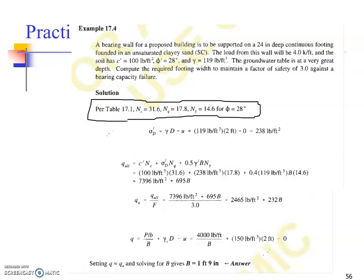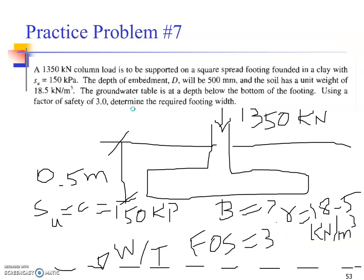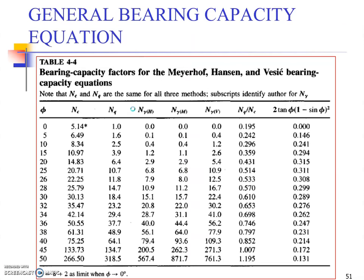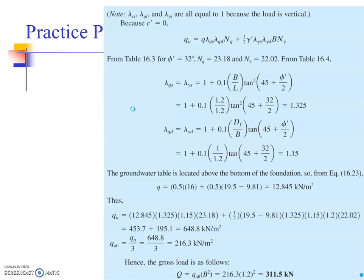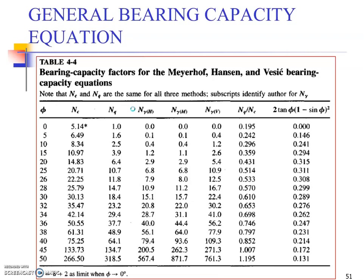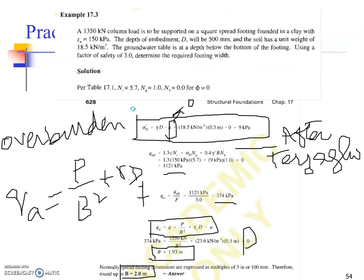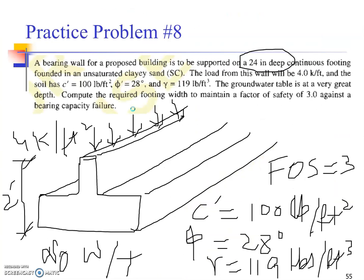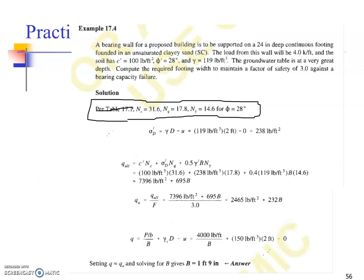You go to the table as per your phi value of 28 degrees and determine Nc, Nq, and Ngamma. This table number is just taken from a handout, so you can go to this table and take your values.